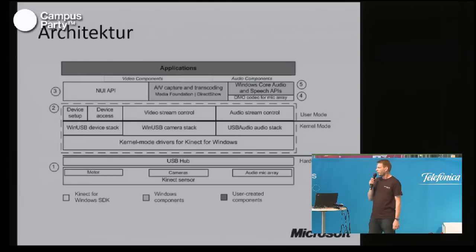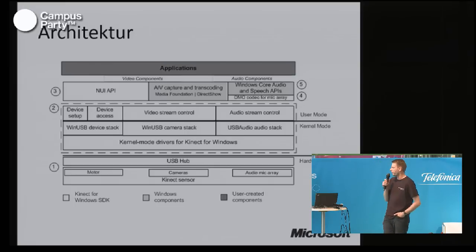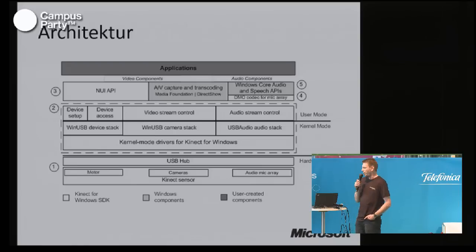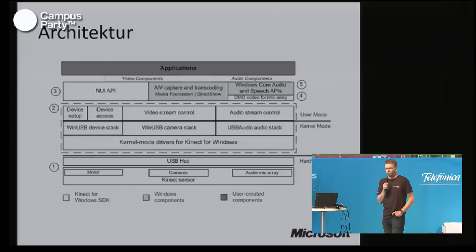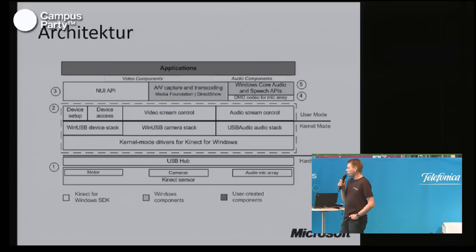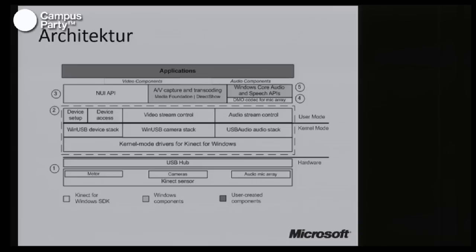We provide the required drivers for Windows, a USB camera stack and audio stack. We provide the .NET interfaces allowing applications to be built in C#. We also integrate into other APIs that come with Windows, like the Speech API and core Windows Audio — which allows you to build complete echo cancellation systems for complex video conferencing. And of course we provide a complete natural user interface API giving you all the capabilities of the Kinect: skeleton tracking, audio control, motor control, LED control, and all the other hardware interfaces required to control the sensor.